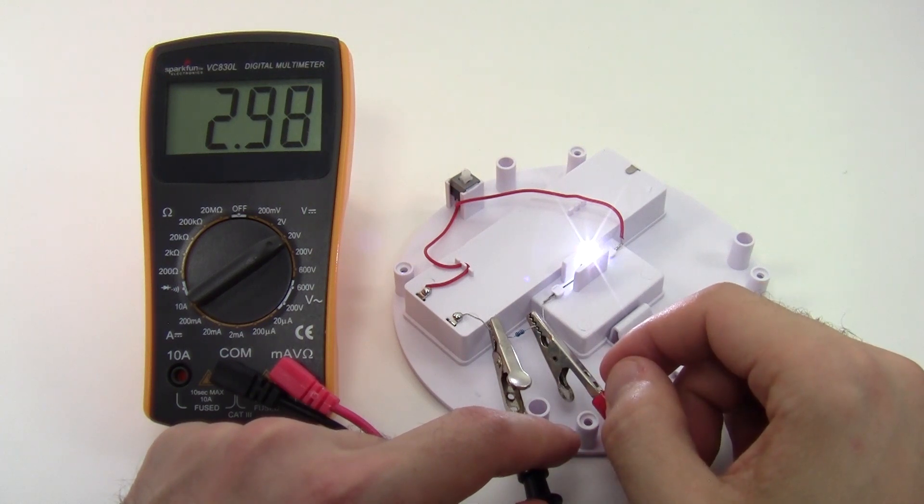I have a separate video that talks about how to correctly calculate the current limiting resistor value for different combinations of LEDs in series and parallel, including different colors. You can find the link to that video in the description of this one.